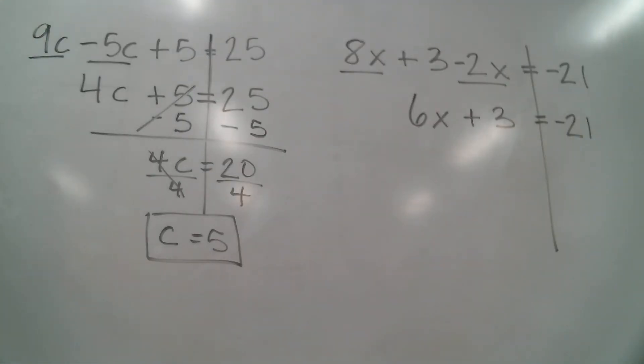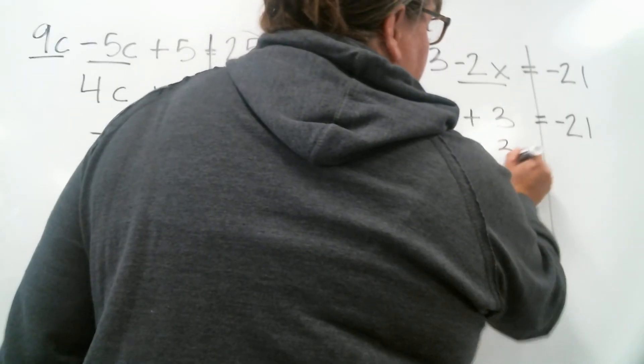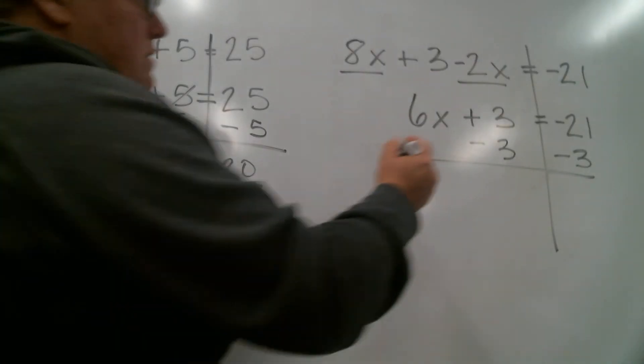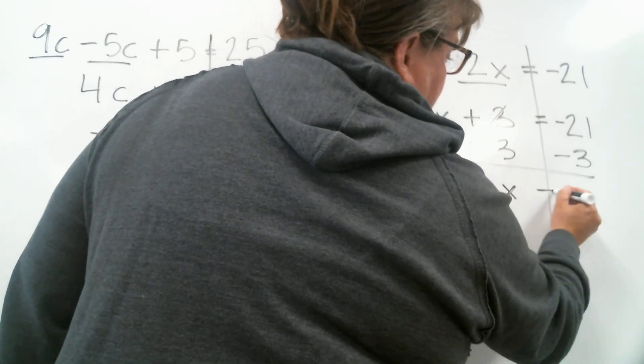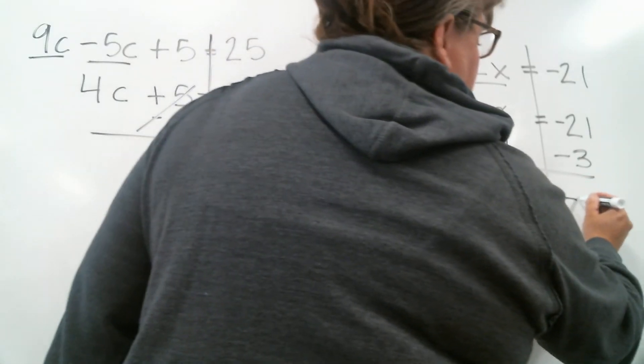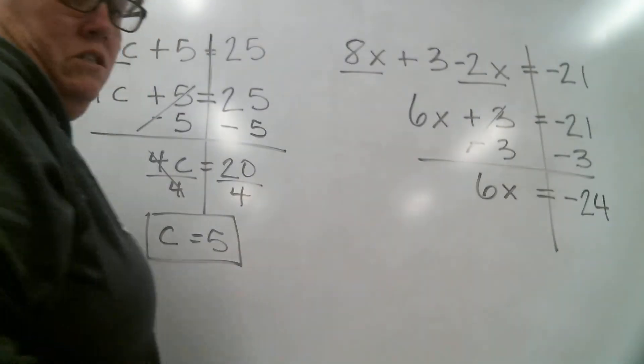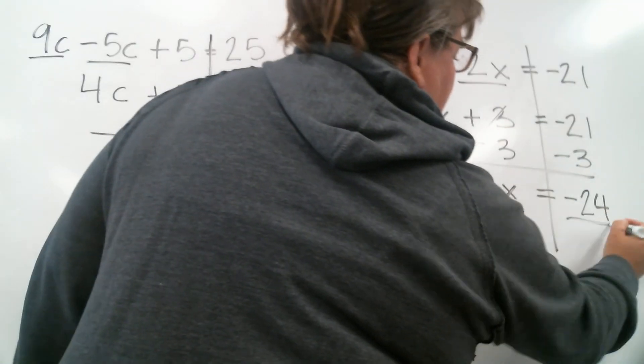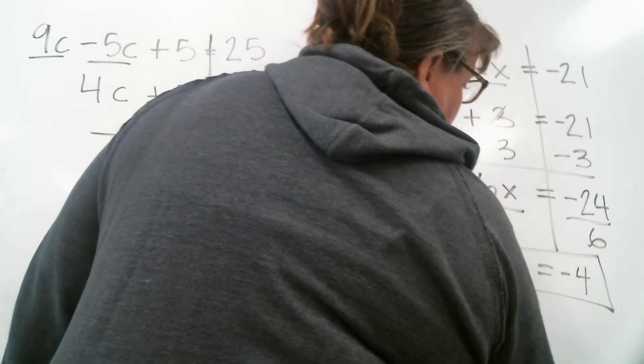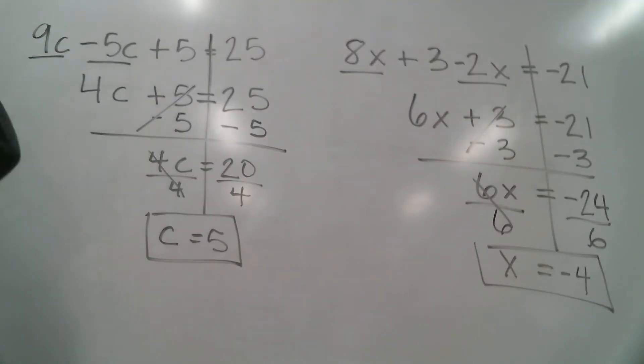Okay, and then I'm left with a regular two-step equation which you're really good at. So I'm gonna subtract 3 from both sides and rewrite it. I've got 6x and a negative 21 minus 3 is negative 24. And then the last thing I need to do is divide by 6. So divide by 6 and I end up with x equals negative 4. Because negative 24 divided by 6 is negative 4. Okay, I'm gonna pause you and we'll do a couple more together.